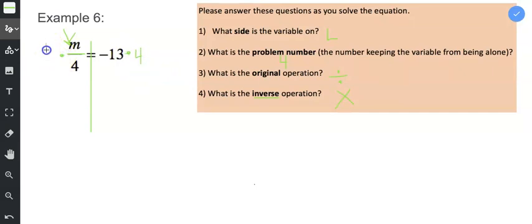And the reason why we're multiplying by the problem number is because the problem number is what we're trying to get rid of so that M can be alone. On the left side I need to write 4 as a fraction because we're multiplying it by a fraction.